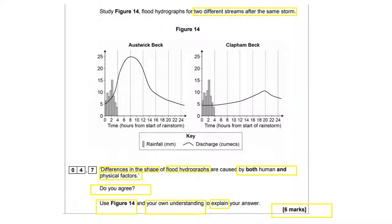They couldn't have made this question any easier if they tried. Flood hydrographs are caused by both human and physical factors. It's a six mark question — there are three marks for human factors and three marks for physical factors. You only need one of each, but you have to develop quite a lot of detail. The actual question is: do you agree? So at some point you're going to have to tell the examiner that you either agree or disagree. It tells you to use figure 14, bring in your own understanding, and give reasons for your answer. Because it's a six mark question, it would be fantastic if you can identify your case study of Boscastle to add a little more evidence. There's lots going on, so it's really crucial you highlight the keywords.